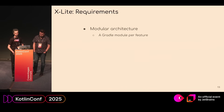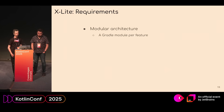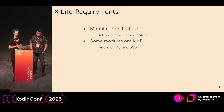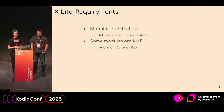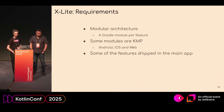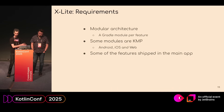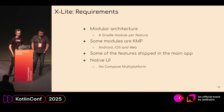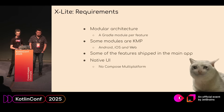Here are some requirements of the new app. It must have a modular architecture — a Gradle module per feature. We should be able to use Kotlin Multiplatform in some of the modules, not every module, but some of them. We want to share this code with Android, iOS, and web. And importantly, we want to use native UI on all platforms, which means we can't use Compose Multiplatform.